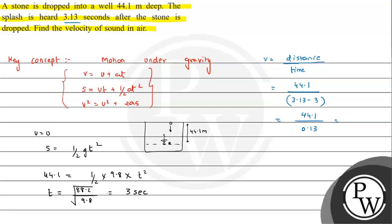And that will be equal to 339.23 meters per second. So this will be the velocity of sound we will be getting. I hope you understood the solution. All the best.